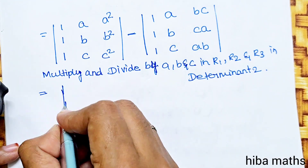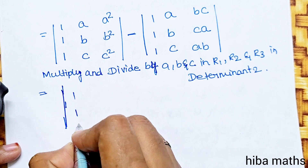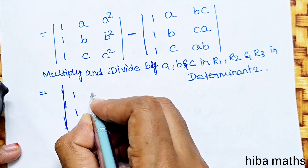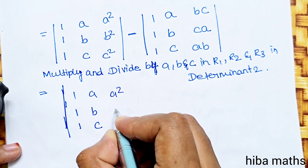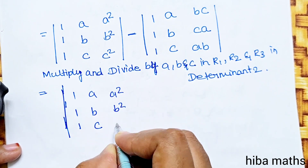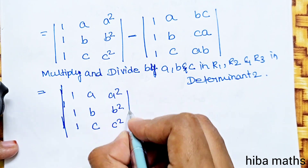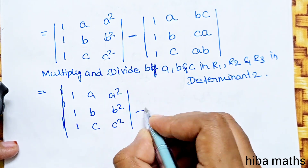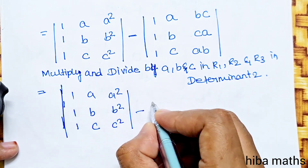The first determinant is with entries 1, 1, 1 in the first row; A, B, C in the second row; A², B², C² in the third row. We multiply and divide.